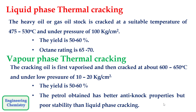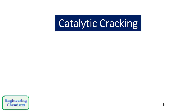The pressure and temperature applied in both thermal cracking cases are very high, making it difficult to achieve, and more fuel is required. In order to avoid this, in the 1940s the same process was carried out in the presence of a catalyst. This process is called catalytic cracking.